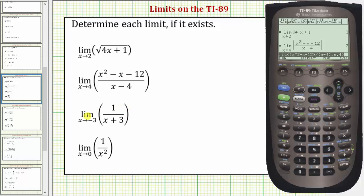Next, we have the limit as x approaches negative three of one divided by the quantity x plus three. So let's go ahead and press F3, option three for limit. The function is one divided by the quantity x plus three. Again, the x plus three must be in parentheses.